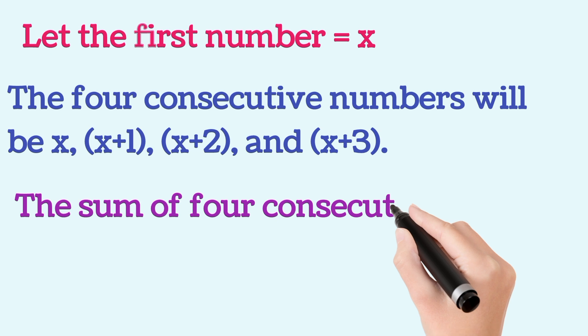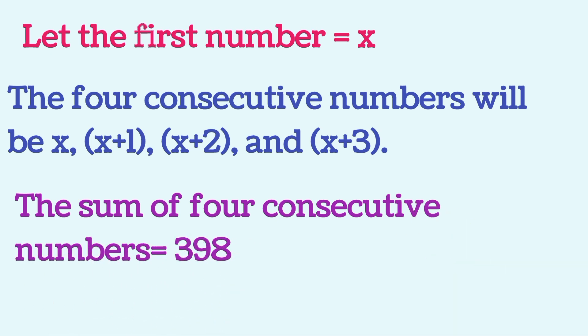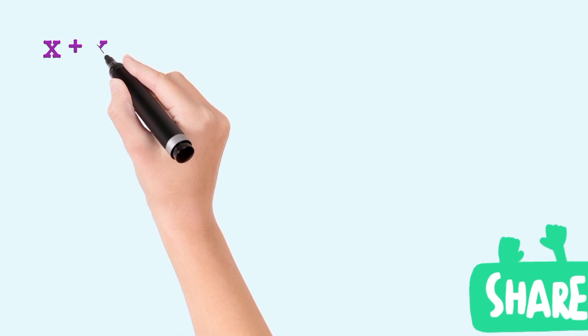The sum of 4 consecutive numbers is given 398. So, let us add all these numbers.